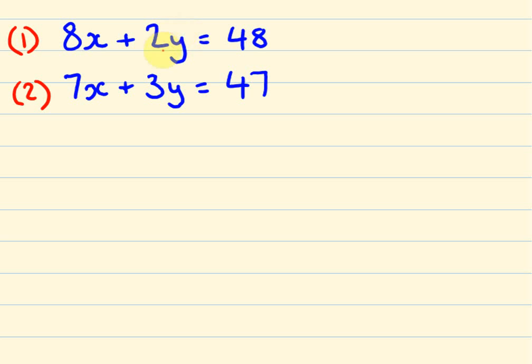The way that we're doing this is we have to get the coefficient, the number in front of at least one of these sets of variables the same. So looking at these, you might be able to look at them and think what's the easiest ones to get the same. I reckon it's easy to get these and make them into 6's. We're going to times this by 3 and this by 2.